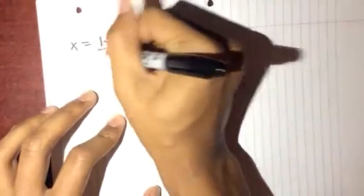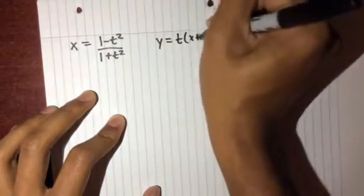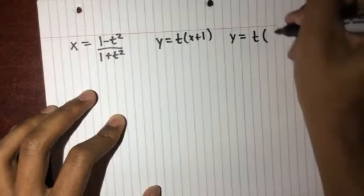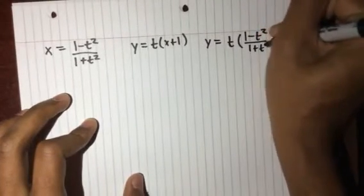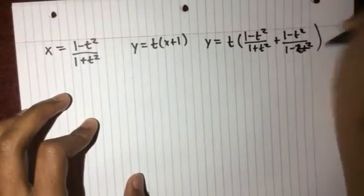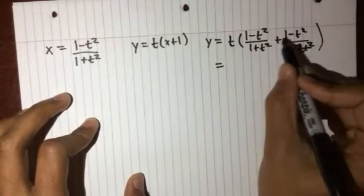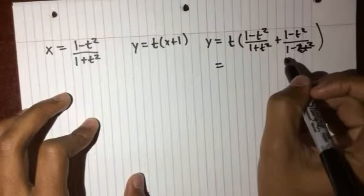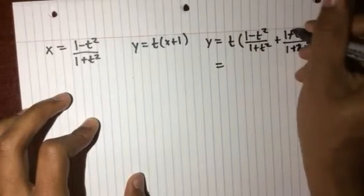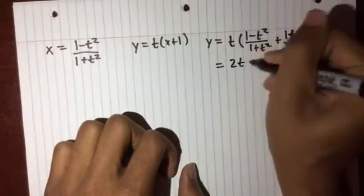So we have x equals 1 minus t squared over 1 plus t squared. Now we know y equals t times x plus 1, so we plug in x we get y equals t times 1 minus t squared over 1 plus t squared plus 1, and then you get 2t over 1 plus t squared.